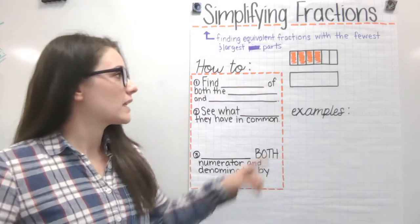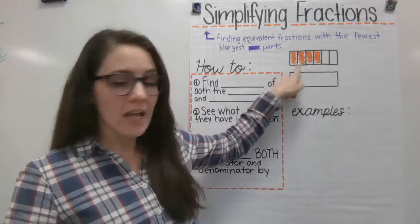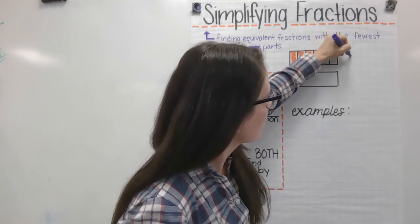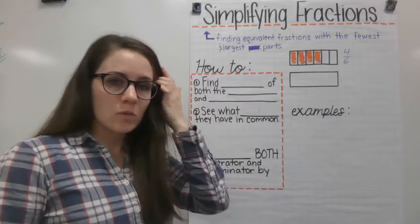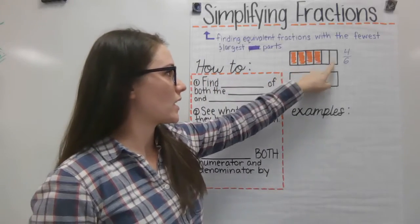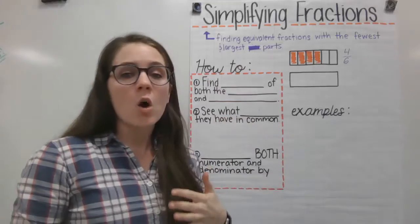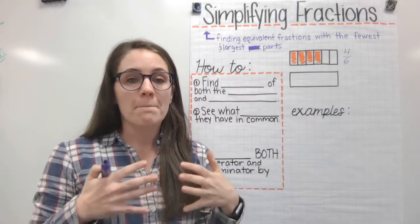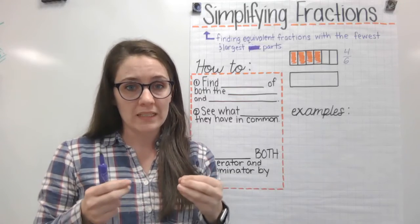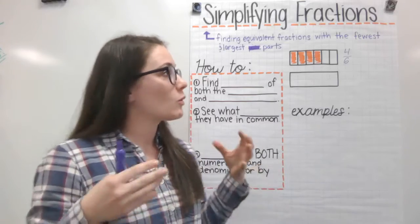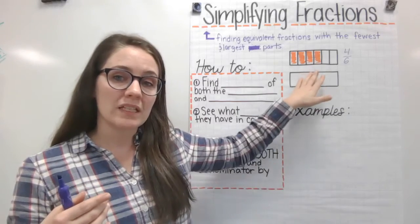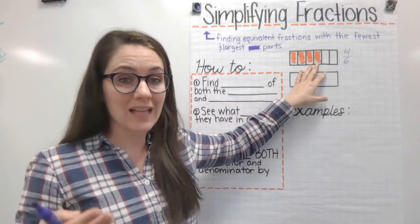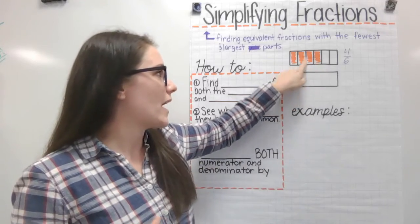So if we take a look at something like this fraction here, this represents the fraction 4/6. We have 4 pieces shaded and 6 pieces total. If we're simplifying 4/6, we're trying to make the fewest number of pieces that are larger. So we're going to combine some of these pieces so that everything is the same size, taking into account what's shaded.